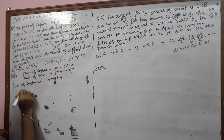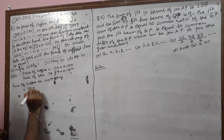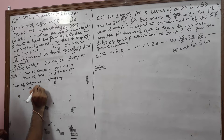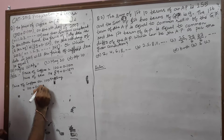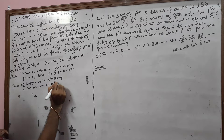That is 100 + 0.10 × 100, so we are getting 110 today.